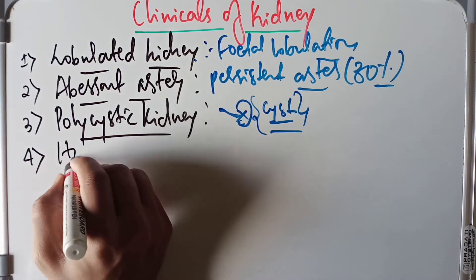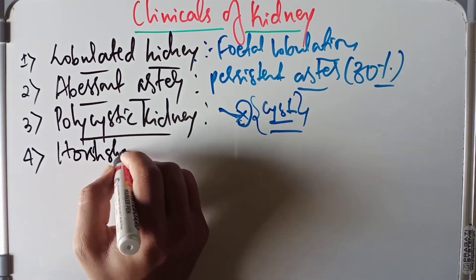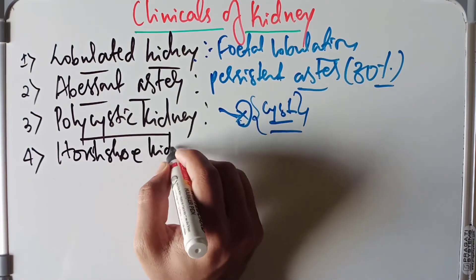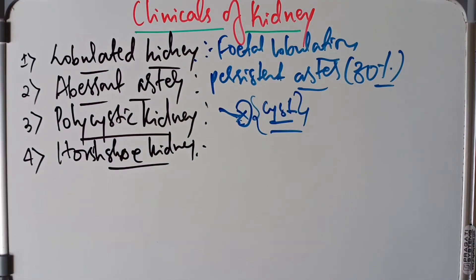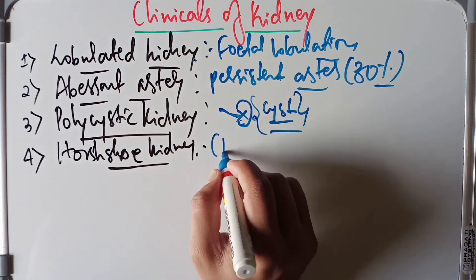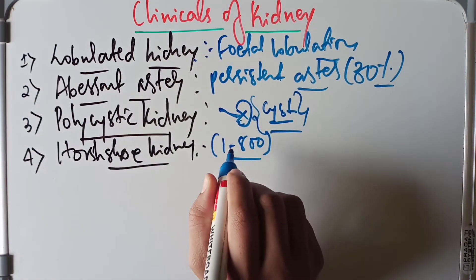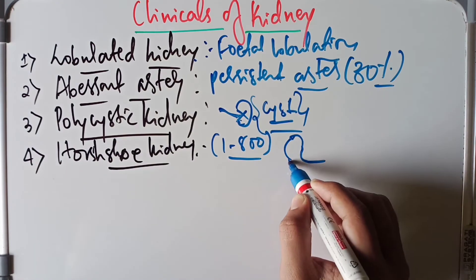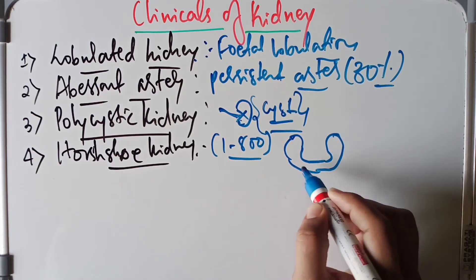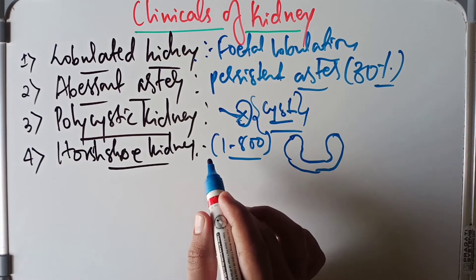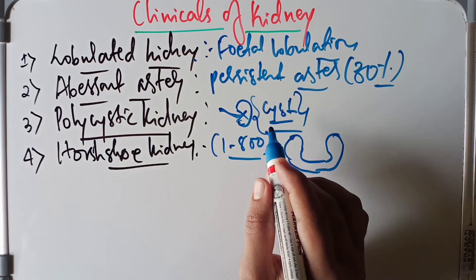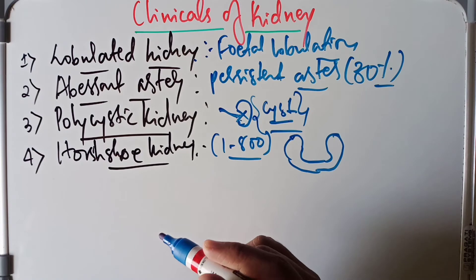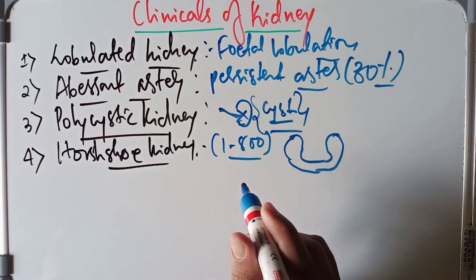The fourth condition is the horseshoe kidney. It occurs in about 1 in 800 people, due to fusion of the lower poles of both kidneys. The two kidneys fuse at the lower pole, resulting in the horseshoe kidney. The ureter passes anterior to the isthmus, and the inferior mesenteric artery also passes anterior to the isthmus, which limits the ascent of the horseshoe kidney.